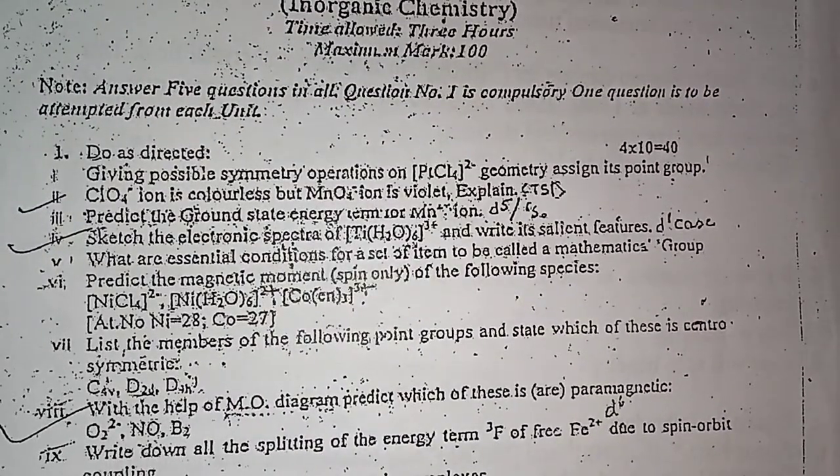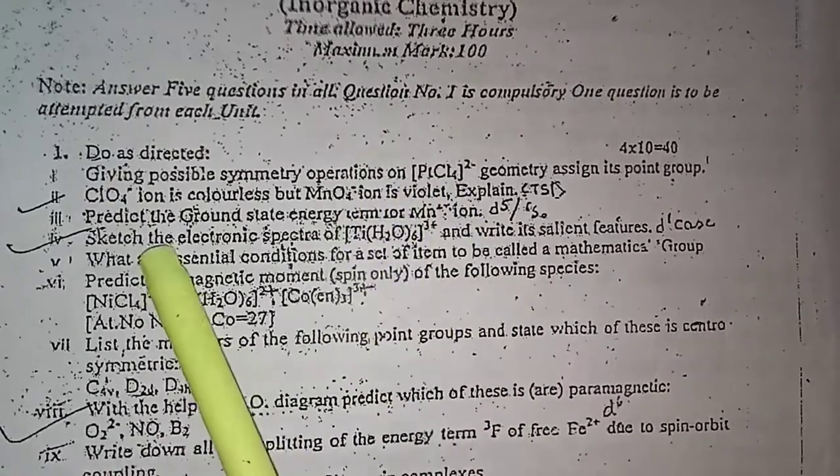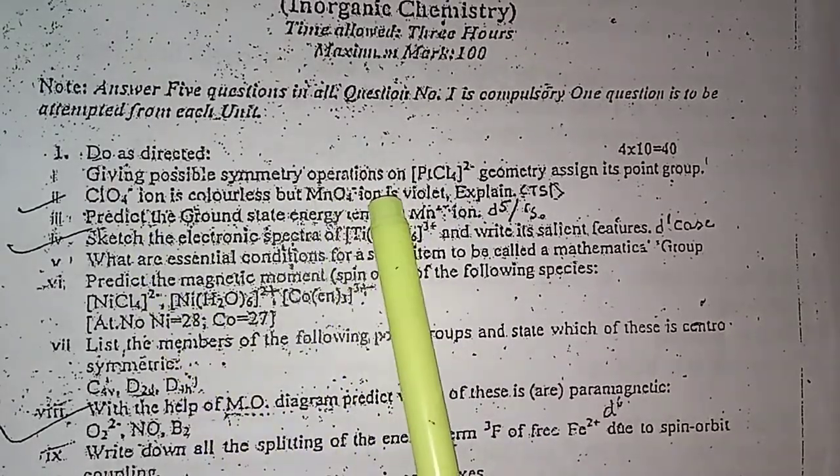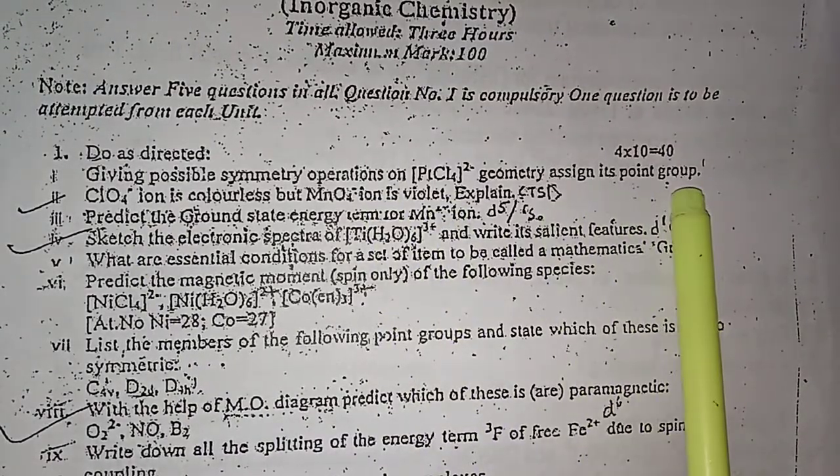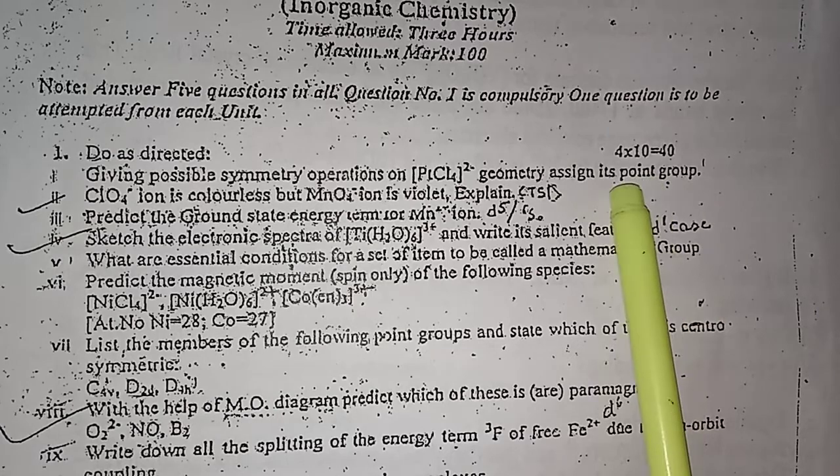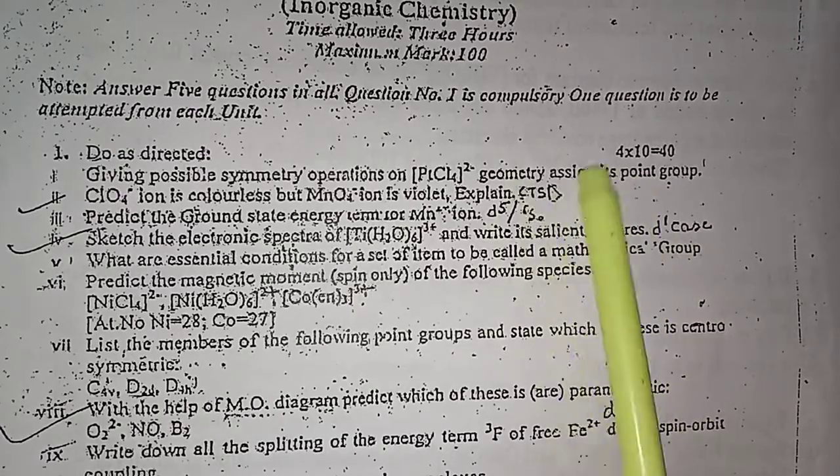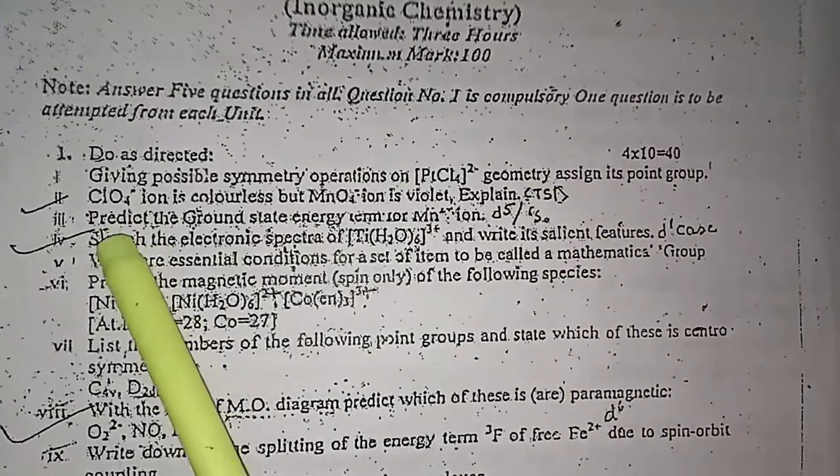Question number one is given here, which is the compulsory question, each of four marks. The first question is about giving possible symmetry operations on PtCl4^2- geometry as an ion and its point group. This question is from the symmetric groups unit.